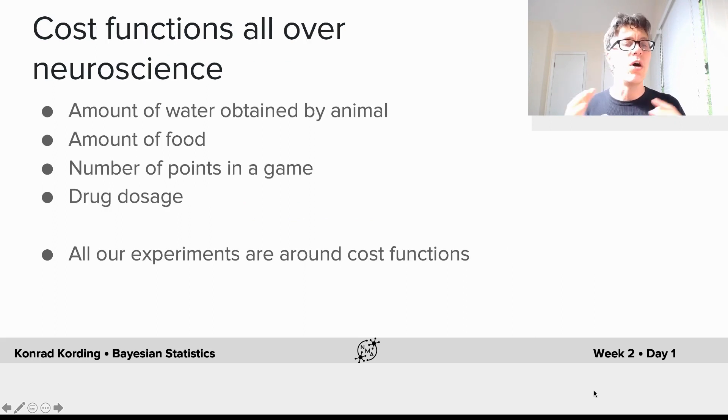Cost functions are all over neuroscience: the amount of water obtained by an animal in an experiment, the amount of food they get, the number of points undergraduates get in a game, the drug dosage.